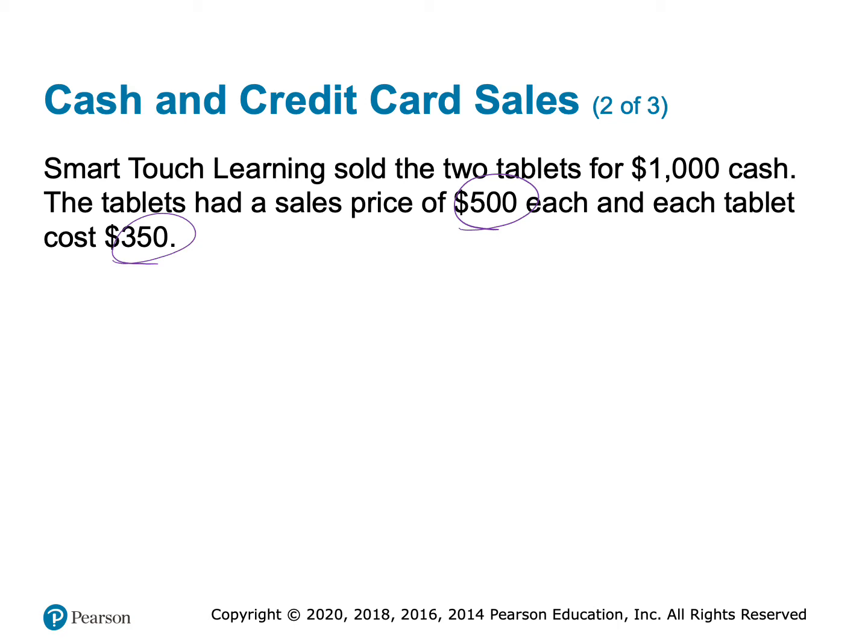In Chapter 6, we're going to learn how to really determine this $350 cost. For this chapter, we're just going to assume it's $350 and ignore the discounted amount for right now. When we get to Chapter 6, we'll learn how to properly determine this.